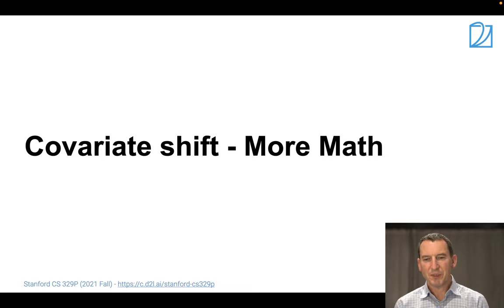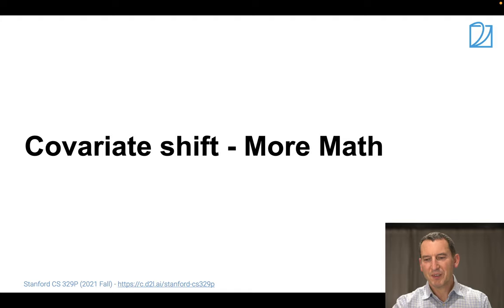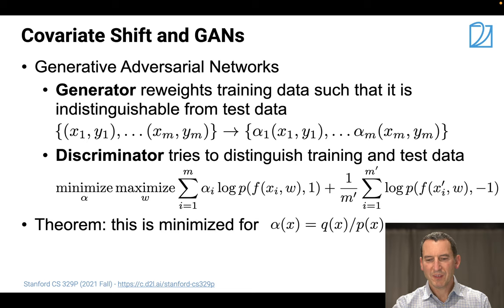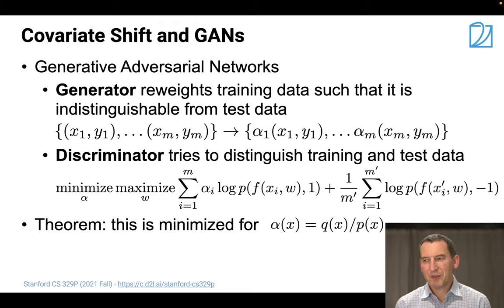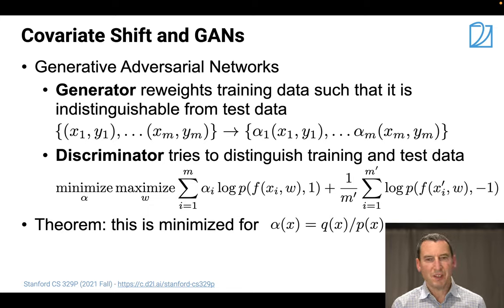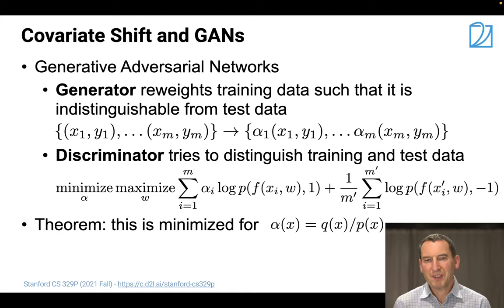Let's have a look at covariate shift with a little bit more mathematical detail. This is entirely optional for the purpose of this course, but I thought it might be quite useful. Rather than designing a classifier, you could use a GAN to generate some data that looks like the test set, and then things are okay.